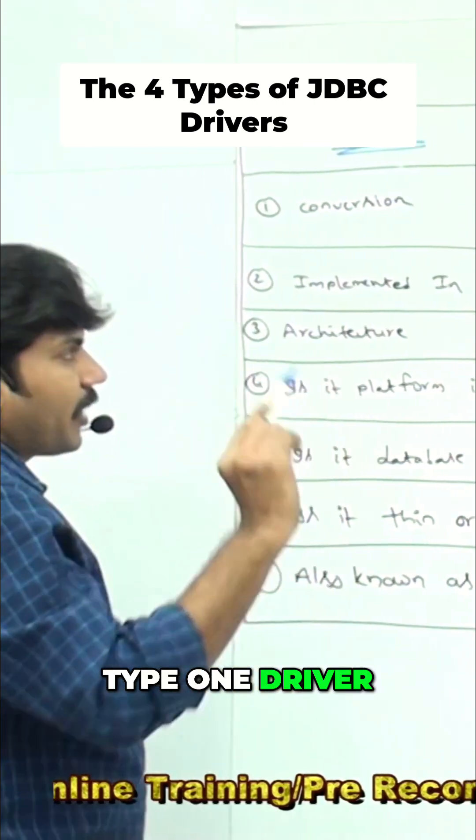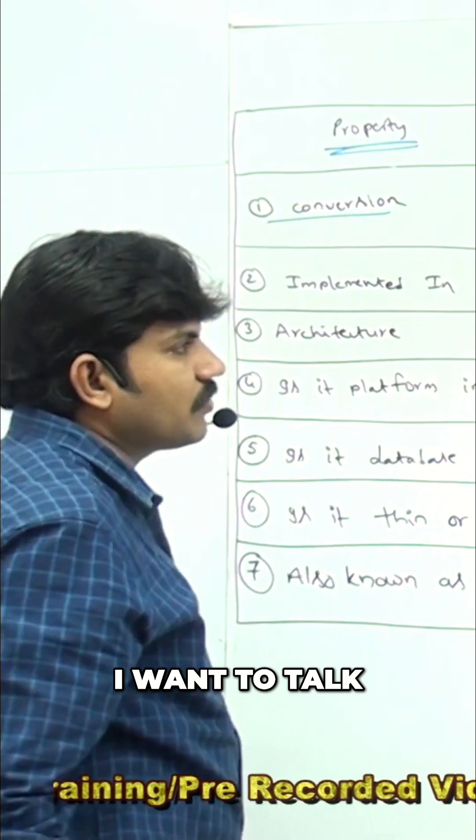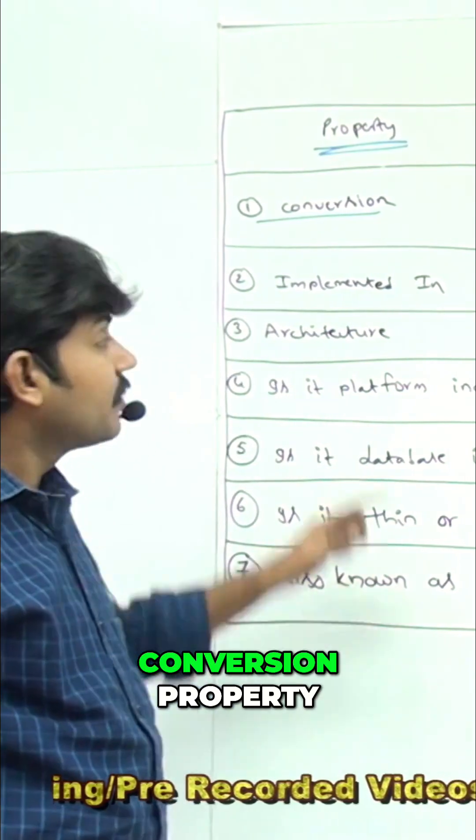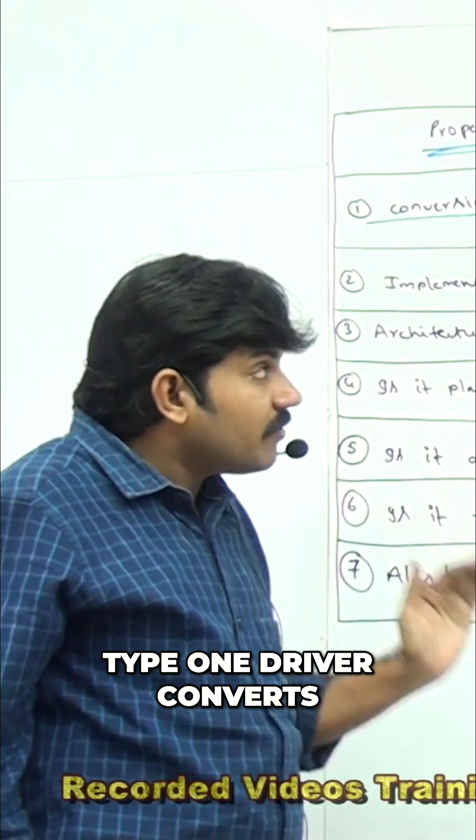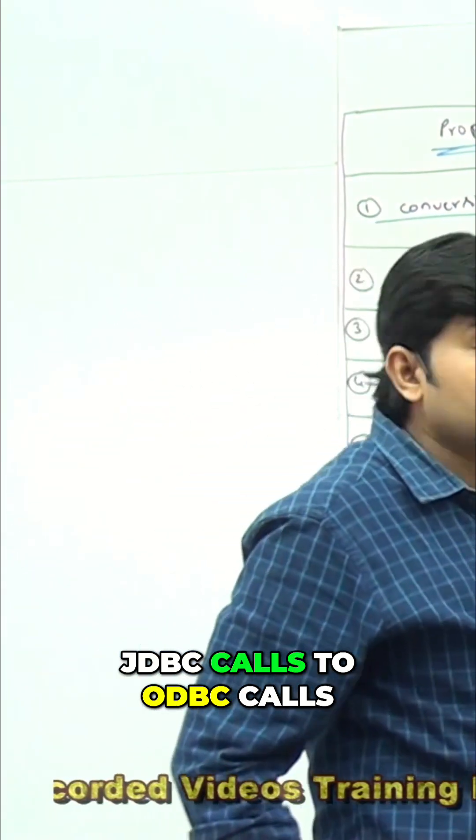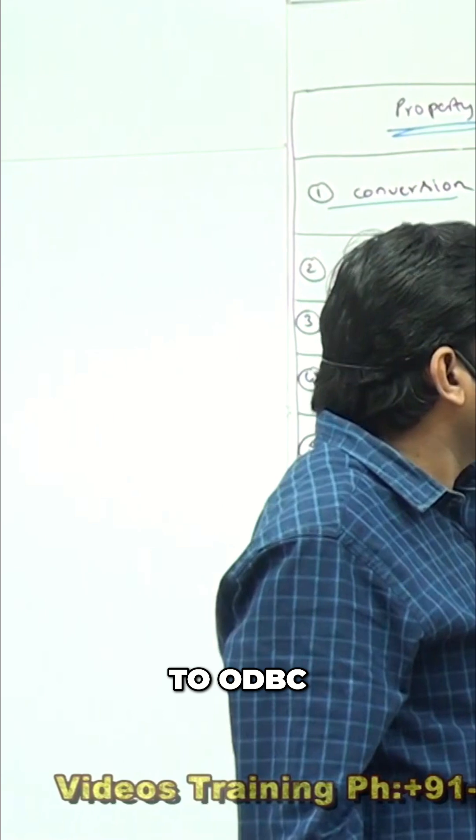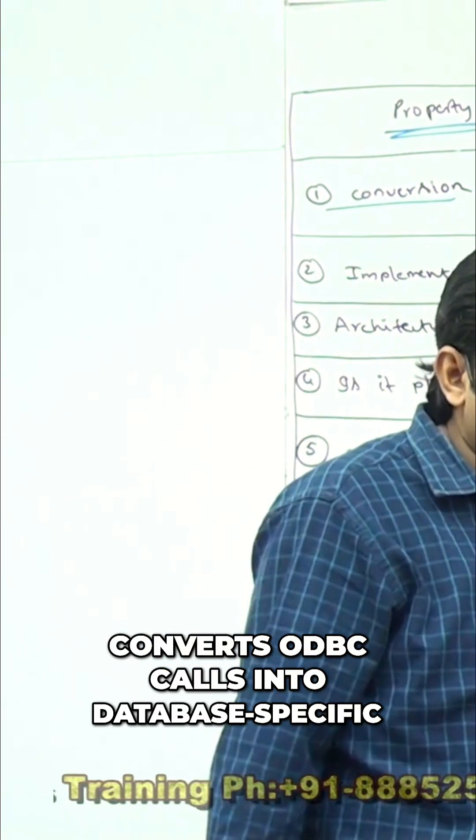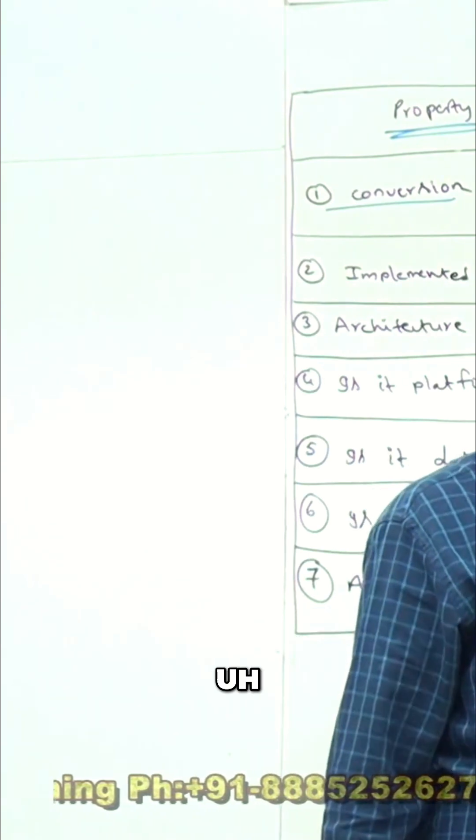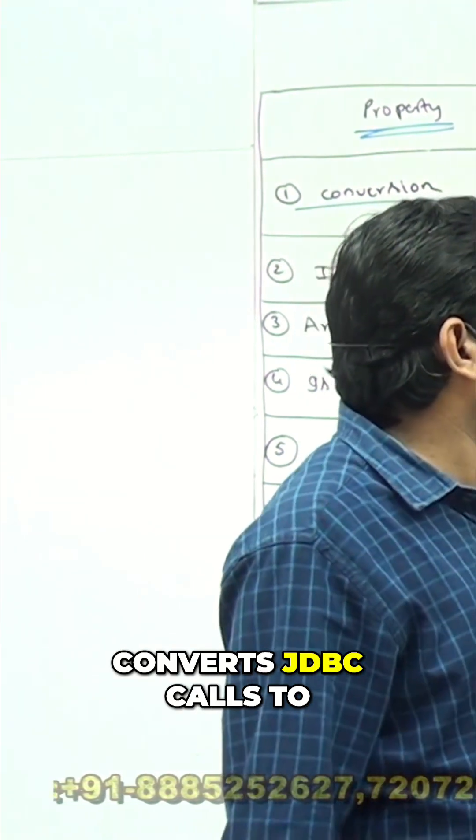Here, type 1 driver - if you consider conversion, I want to talk about what conversion property. Type 1 driver converts JDBC calls to ODBC calls, correct or not? It will convert JDBC to ODBC, and then ODBC driver converts ODBC calls into database specific calls. Clear? So type 1 driver converts JDBC calls to ODBC calls.